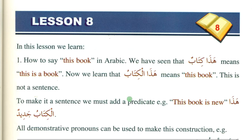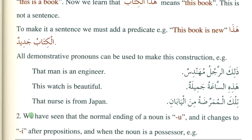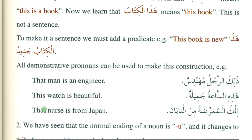To make it a complete sentence we need a predicate, a khabar. So we add the word jadeed: haza alkitabu jadeed — 'this book is new' — and it becomes a complete sentence. All demonstrative pronouns can be used to make such sentences where we give news about a definite noun, a marifa noun. Words like rajulun and al-mumarida all have 'al', so they are all marifa — definite.